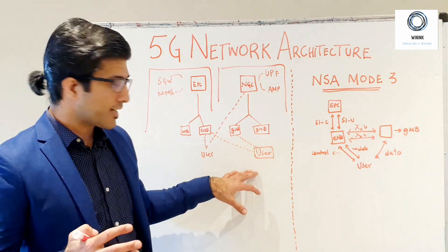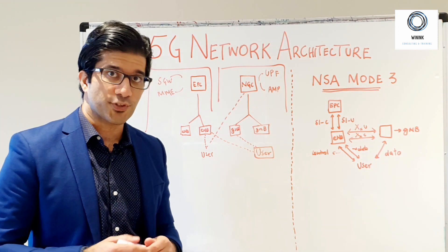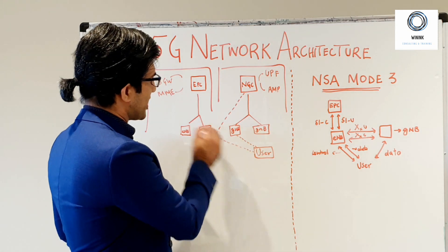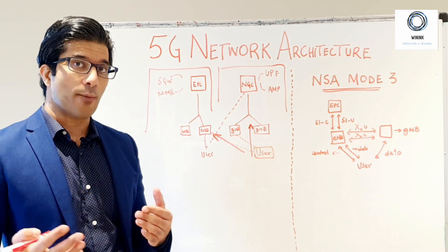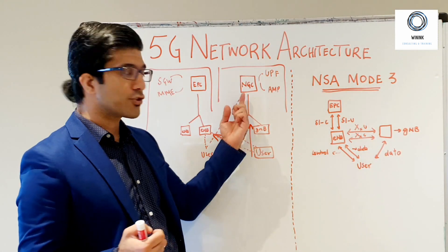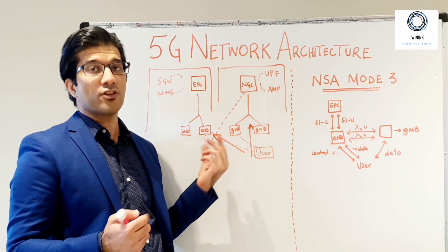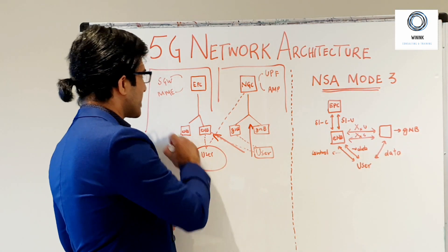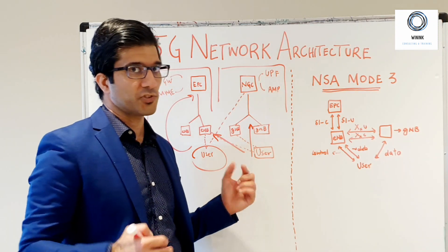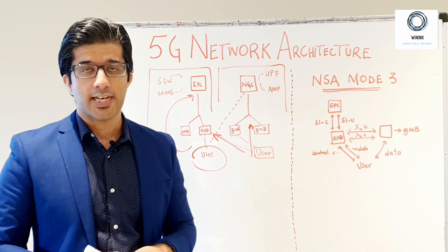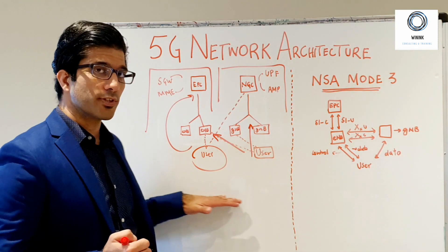If we have a user here, 5G specifications give you the capability to attach to the LTE network and at the same time attach to the 5G network as well. A user can be attached to the Next Generation Core and also to the LTE network, or vice versa — a user attached to EPC can also be attached to the 5G network. This is called multi-connectivity, which we mentioned in our first lecture.